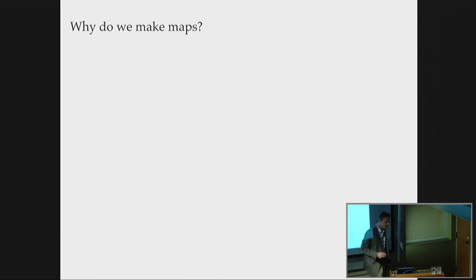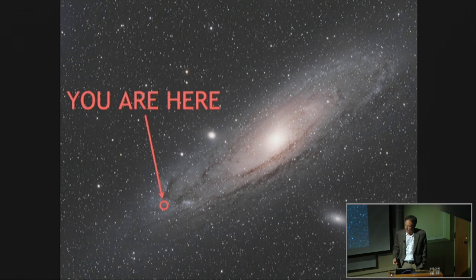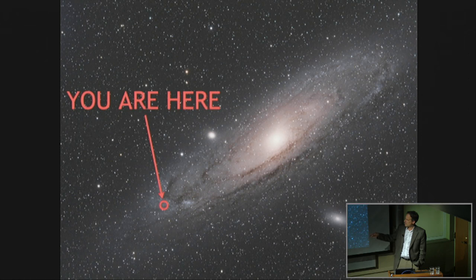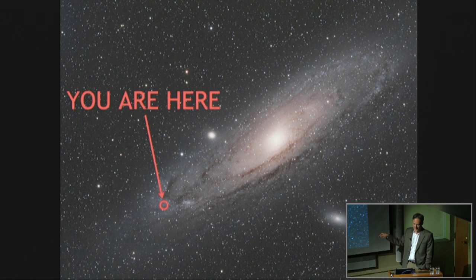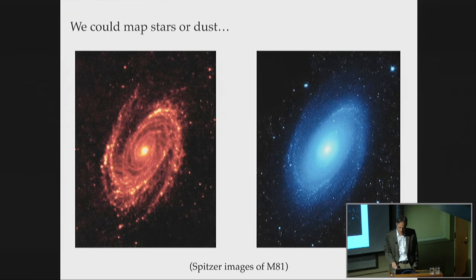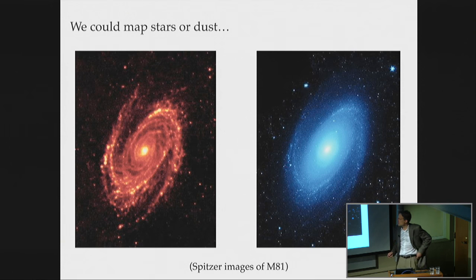So why do we make maps? In general, humans make maps because they want to know where they are. But if you're going to travel somewhere else, you need a map of the stuff in between — we want to know the larger context of where we are. It's amazing how every time you try to look at an object, you find there's some dust between you and that object, and you need to correct your measurements for the dust. So we want to map out our Milky Way — we could do it with stars, dust, or even gas.